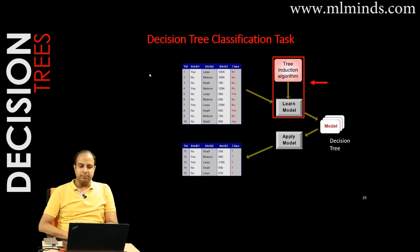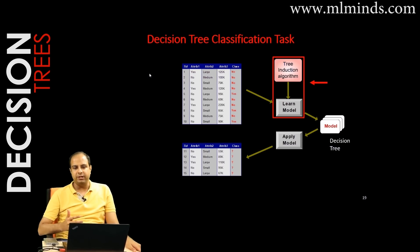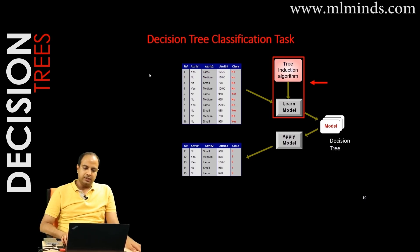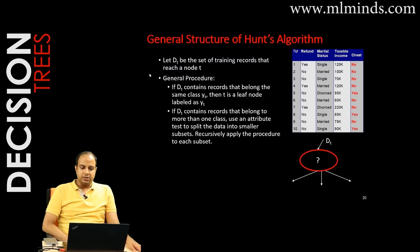Next, let's talk about how to start training a decision tree. This will be called a tree induction algorithm. One of the popular tree induction algorithms is called Hunt's algorithm.